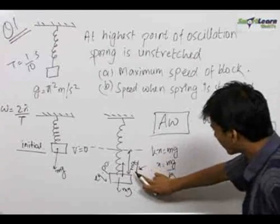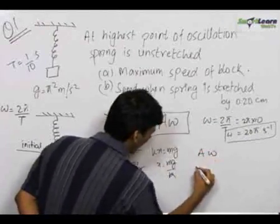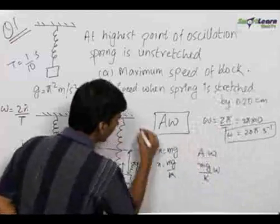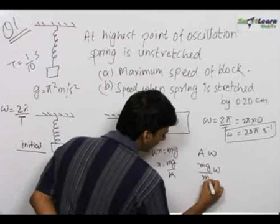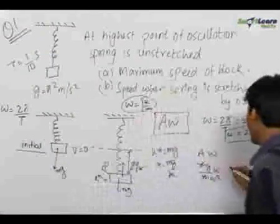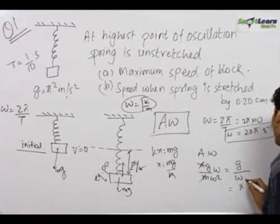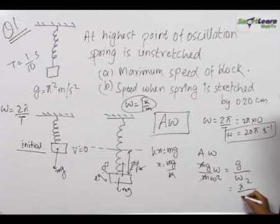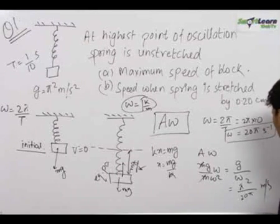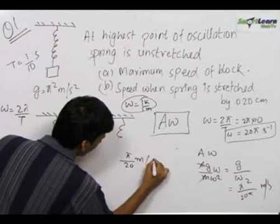We know the value of A which equals mg by k, and we need to find A times omega, that is mg/k times omega. In SHM, k equals m times omega squared, so substituting, the maximum speed simplifies to g upon omega. The value of g is given as π² meters per second squared. Therefore, maximum speed equals π² upon 20π, which equals π by 20 meters per second.